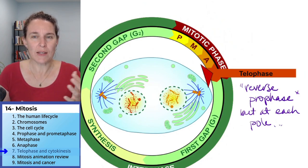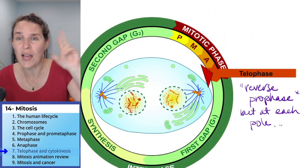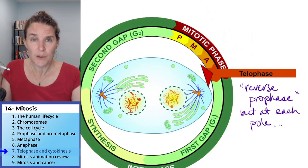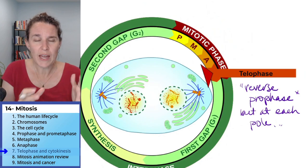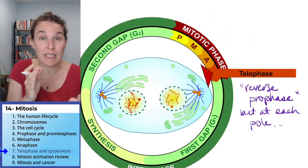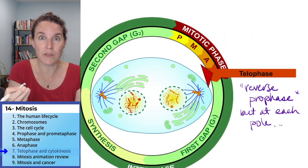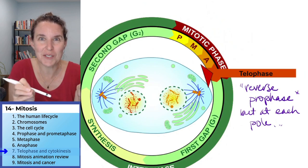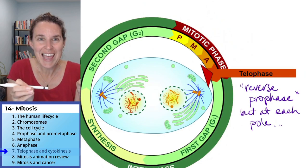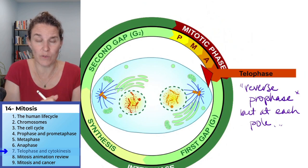In prophase, you condense all your chromosomes, get rid of the nucleus, nucleoli peace out, get some centrioles and their spindle fibers — stuff's all happening. All of that happens through prophase, so you do metaphase and anaphase — line them up, split them out — and then reverse prophase so that you end up with the original cell all over again.